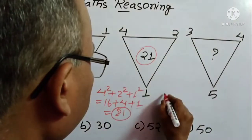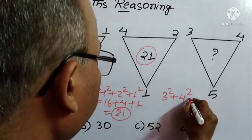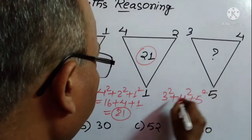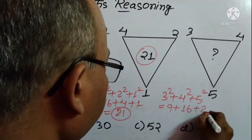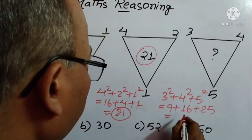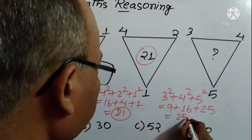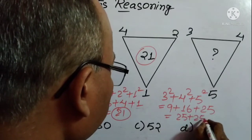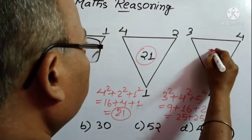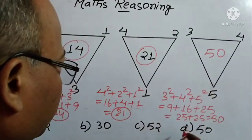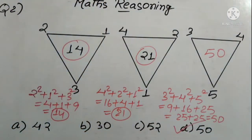So here 3² + 4² + 5²: 3 squared is 9, 4 squared is 16, 5 squared is 25. So 9 + 16 = 25, plus 25 = 50. So here we have to write 50. So 50 is the answer, which is given in option D.